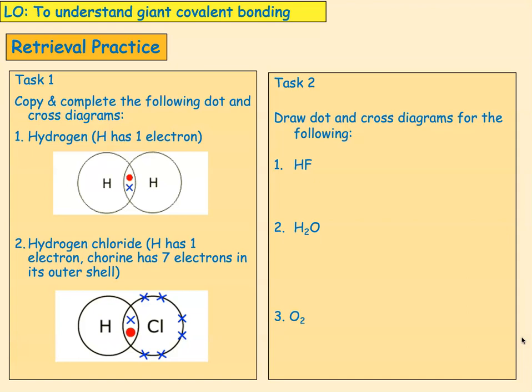The chlorine, if you go round, you can count there are eight now in the outer shell and for the hydrogen you have two. So both of them have got full outer shells.